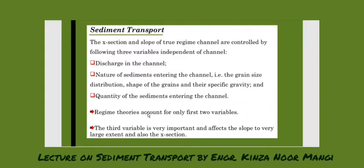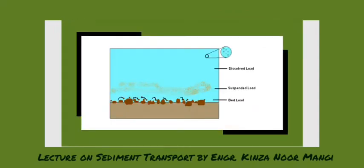Because the silt has settled and formed another layer, the storage capacity of the channel has decreased. It also affects the slope, as silt particles have accumulated along the slope as well. Now moving on to the next slide.